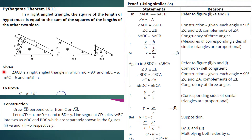Given that triangle ACB is a right angled triangle in which measure of angle C is equal to 90 degrees. We assign measure BC equal to a, measure AC equal to b, and measure AB equal to c. Side AB is the hypotenuse. We have to prove that c squared is equal to a squared plus b squared.